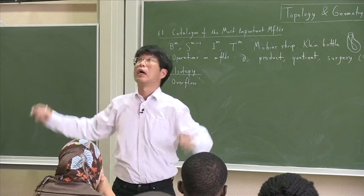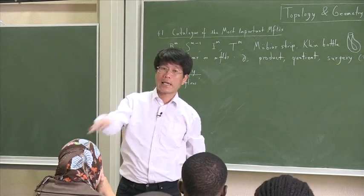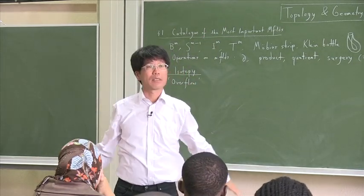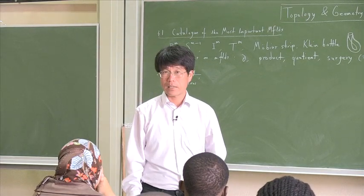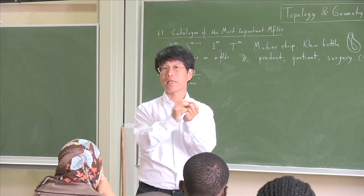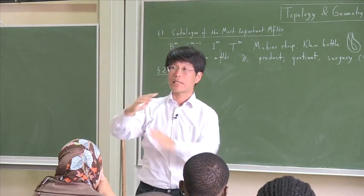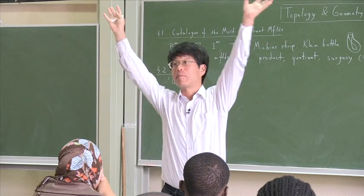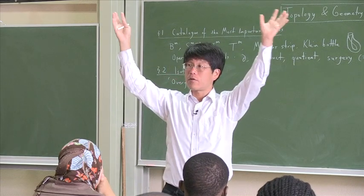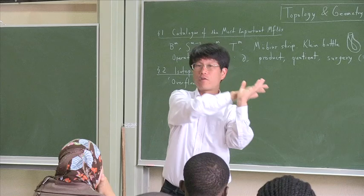And if you have an M-dimensional manifold, and K-dimensional and L-dimensional submanifolds, whether they intersected or not, generically, depended on K plus L minus M. You see, K plus L is what you have to put in, and M is how much room there is. So that difference tells you how much overflow there is.